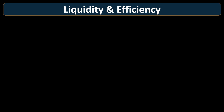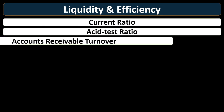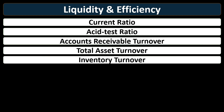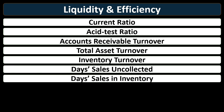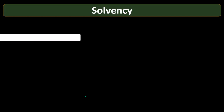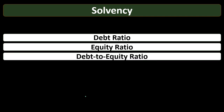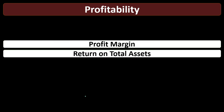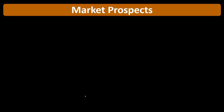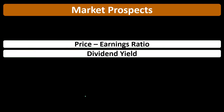The liquidity and efficiency ratios include the current ratio, acid test ratio, accounts receivable turnover ratio, total asset turnover ratio, inventory turnover, days sales uncollected, and days sales in inventory. Note that liquidity and efficiency ratios are the most common, so if you're unsure which category a ratio belongs to, that's your best guess. Solvency ratios include the debt ratio, equity ratio, debt-to-equity ratio, and times interest earned. Profitability ratios include profit margin, return on total assets, and return on common stockholders' equity.